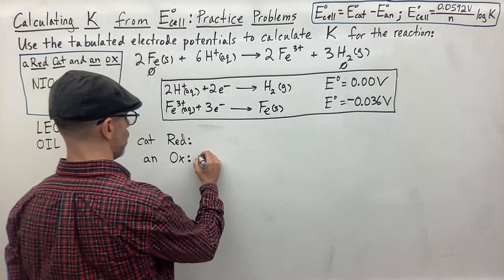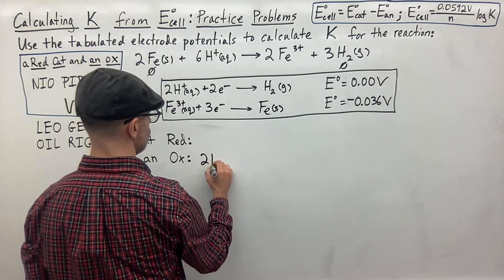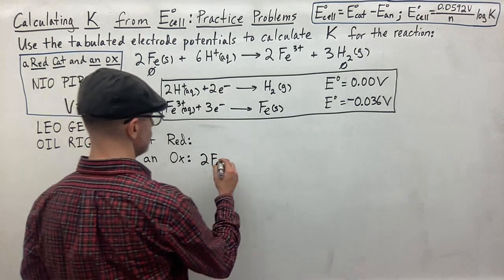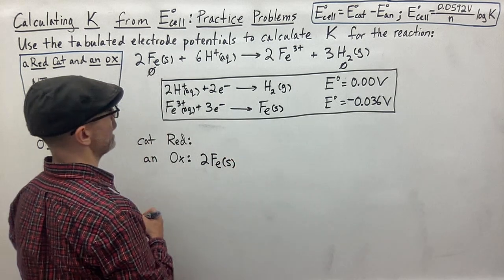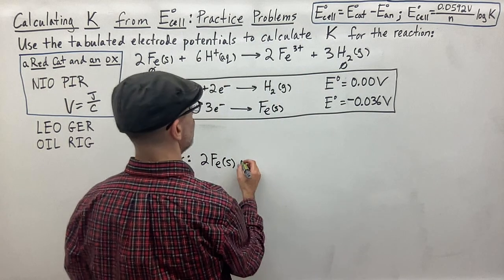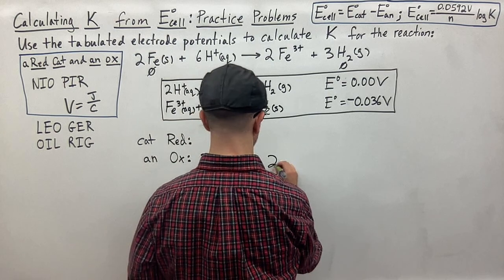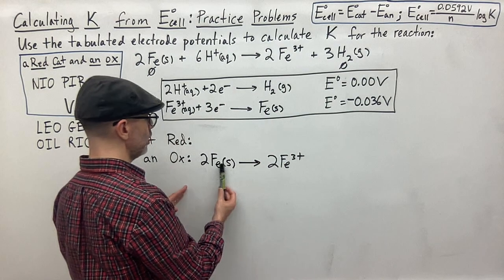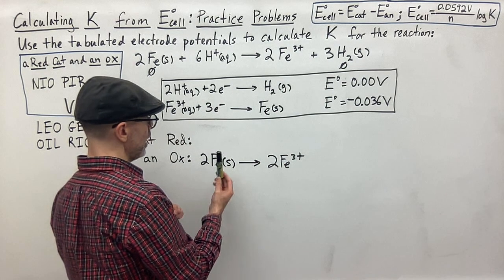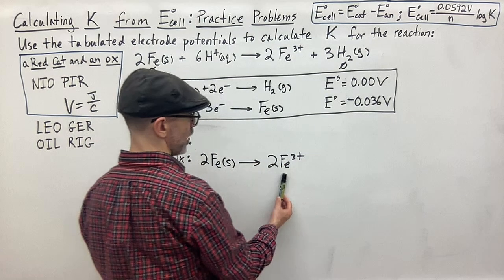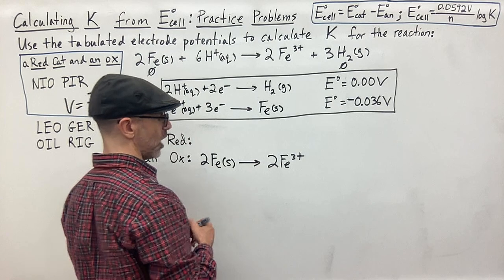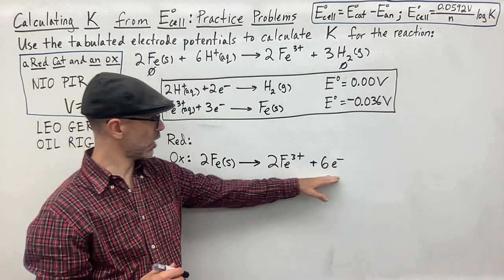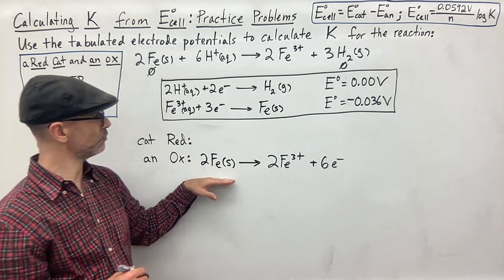So we write the oxidation half-reaction: two Fe solid forms two Fe³⁺. We're losing electrons — each iron atom lost three electrons, and since we have two iron atoms, that's a total of six electrons lost. So here is our oxidation half-reaction: 2 Fe(s) → 2 Fe³⁺(aq) + 6e⁻.